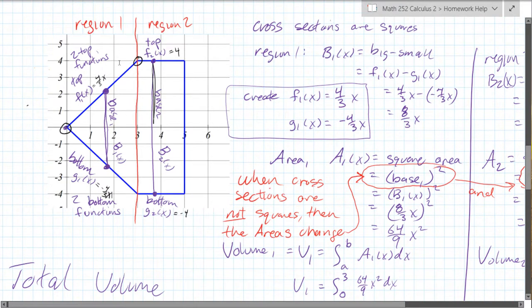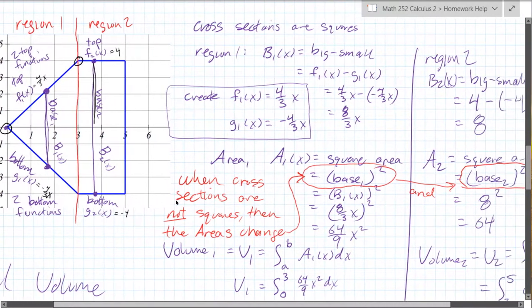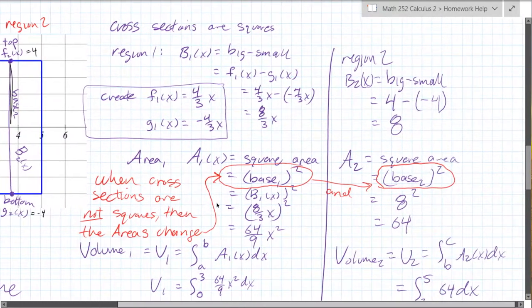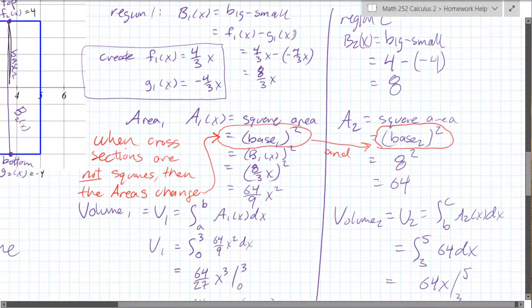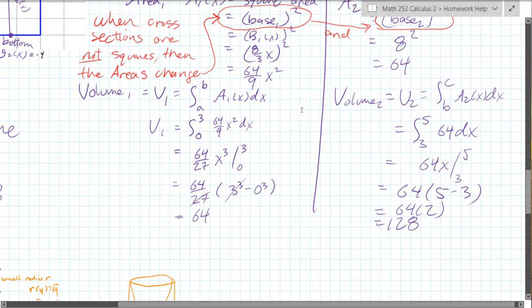Now, the second region is actually quite a bit more simple, because the top and bottom function are four and negative four. So you do the exact same process, and four minus negative four is eight, and you square that base. Well, the base is always eight, so the area is always gonna be eight squared, or 64. Integrate 64 from three to five, and you get 64 x, plug in the endpoints, and you get 128.